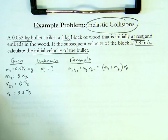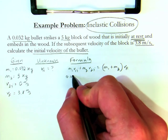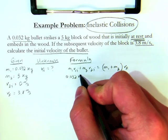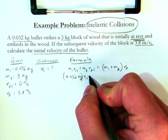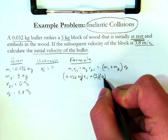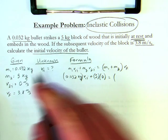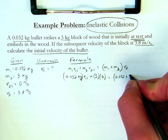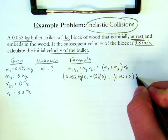Then I make my substitution, my m1 is 0.032 kg, times my v1 i, which I don't know, plus m2, which is 5, times 0, which is v2 i, equals my two masses, so 0.032 plus 5, times my final velocity, which I know is going to be 3.8 m per second.